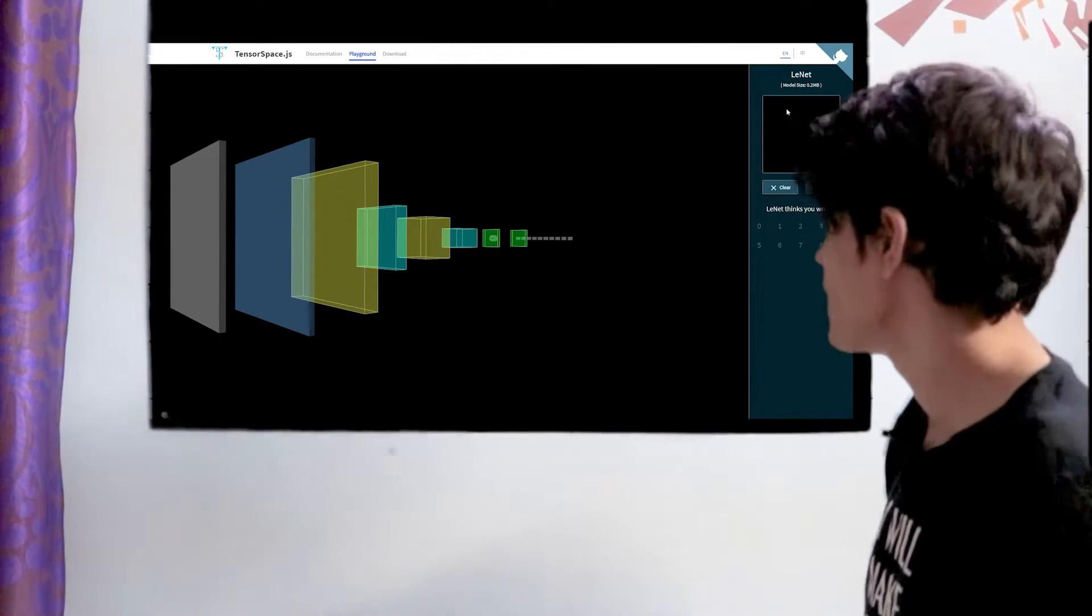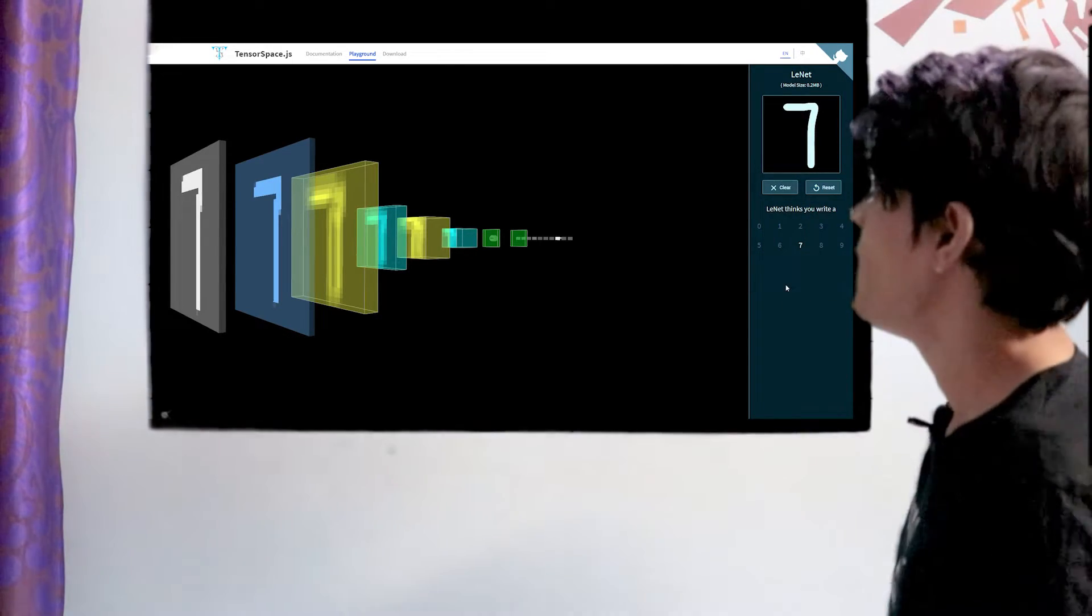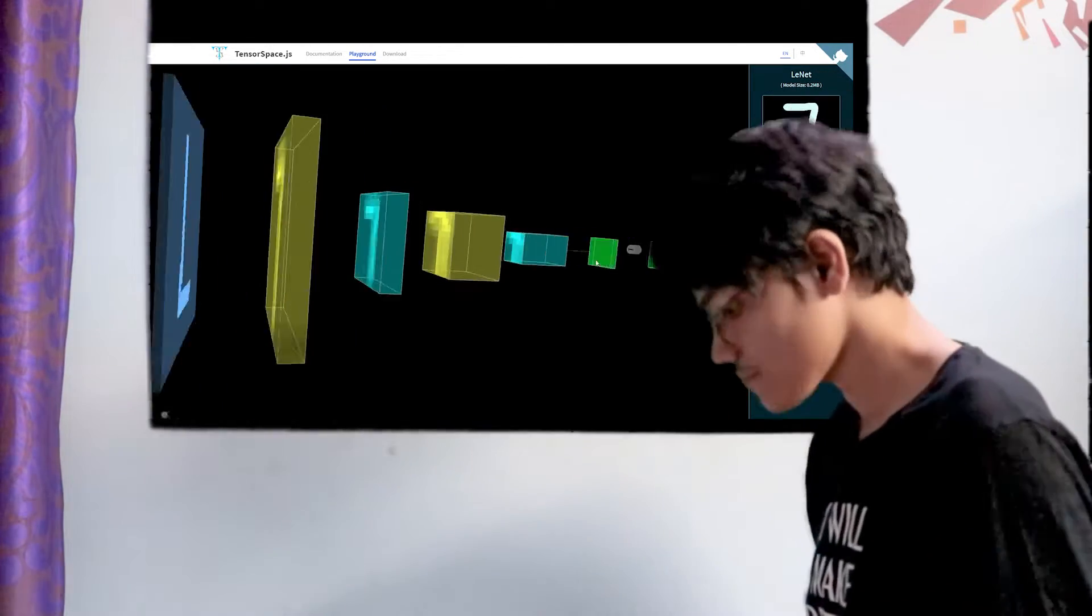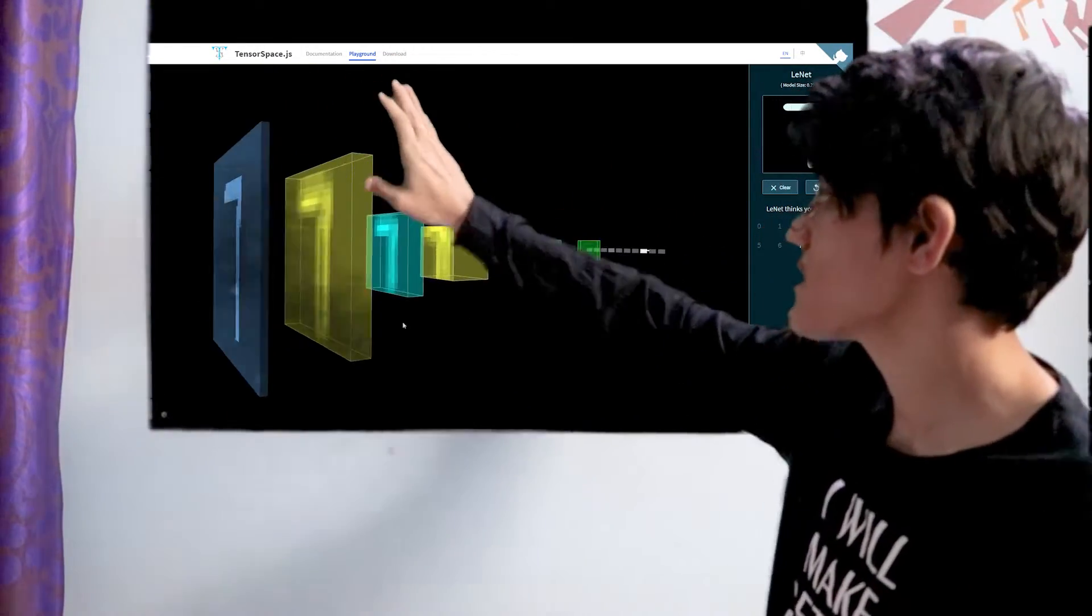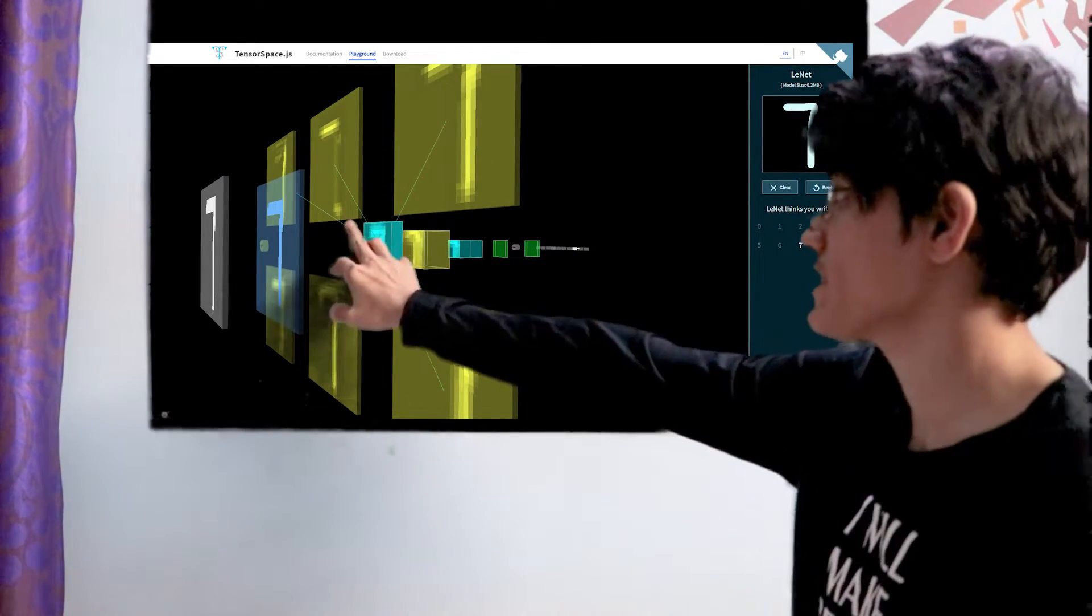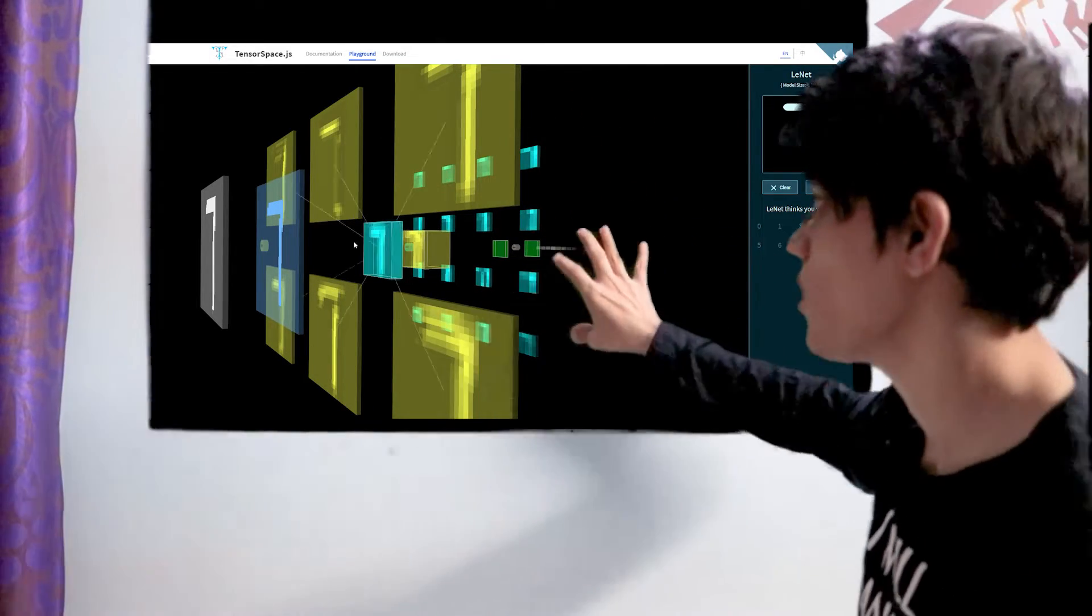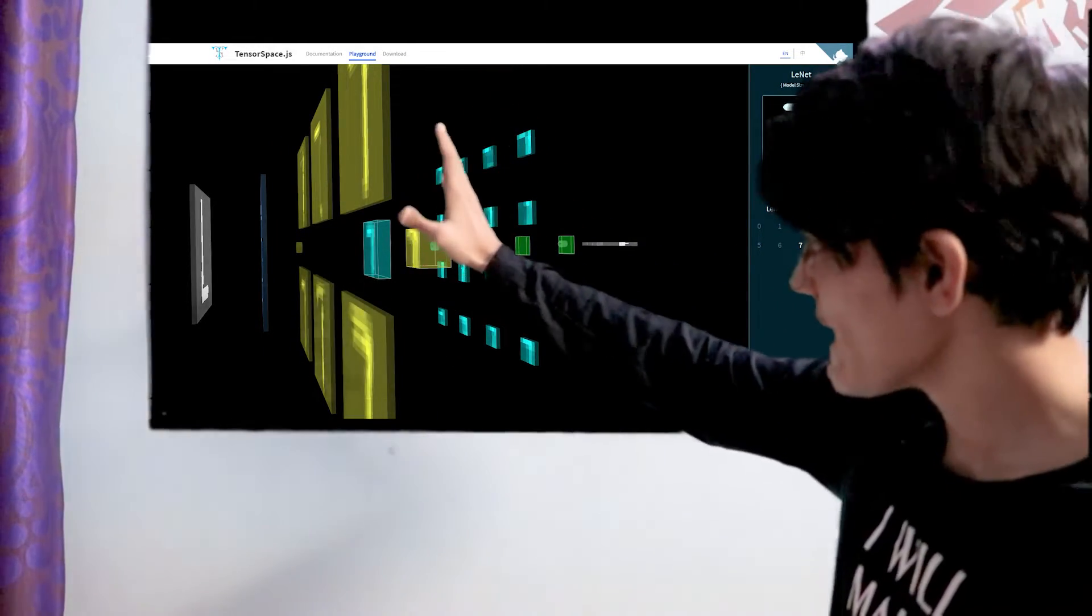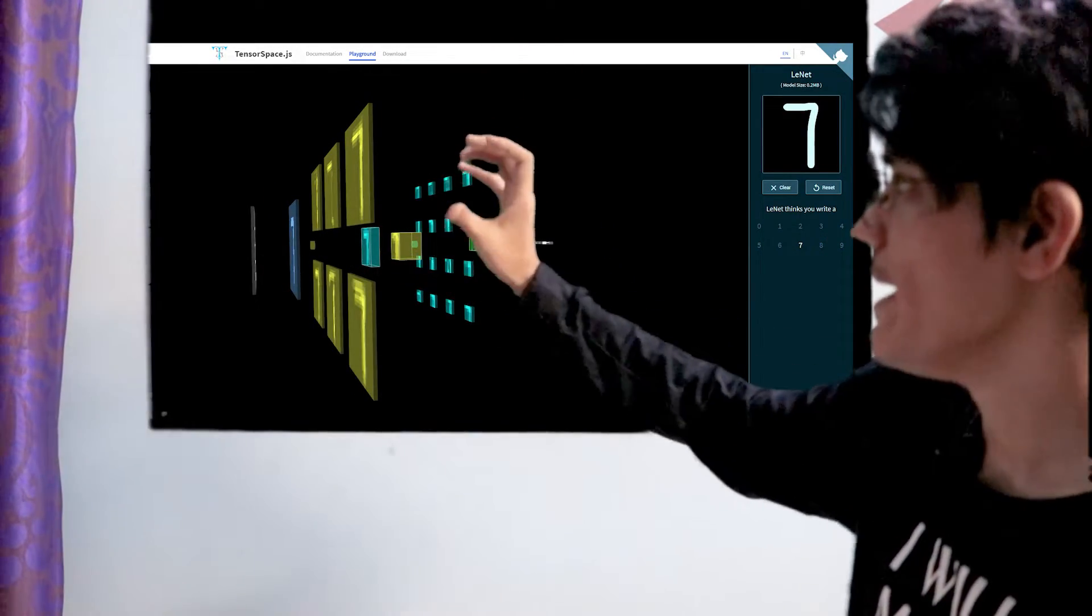If we write input as 7, we can see it classifying as 7. In the 3D architecture, we can see how each convolution is made. We have 6 feature maps here and 16 feature maps in the second convolution. We can see how convolutions are made and how they collect features one by one in separate matrices.